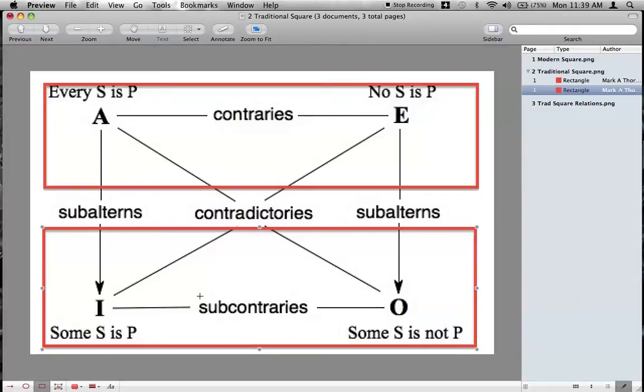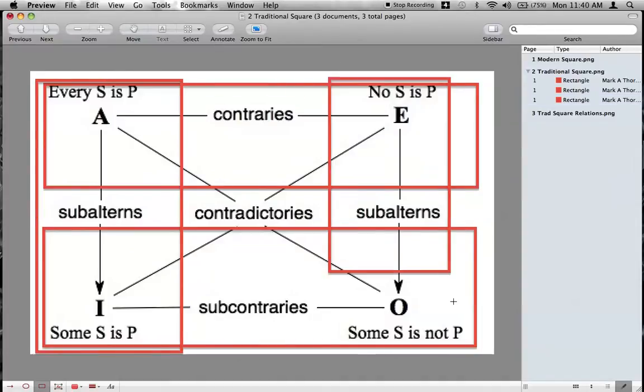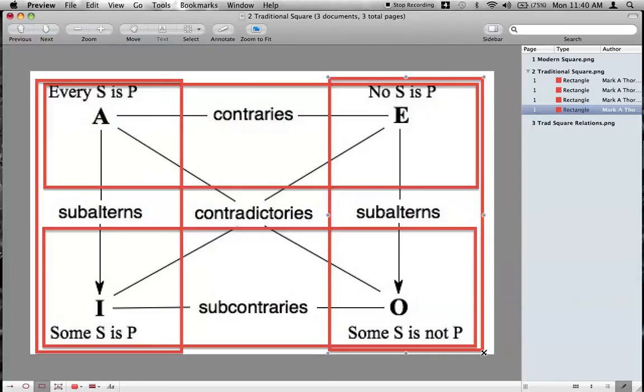So, these are the universals up here, and the particulars are down here. Now, by contrast, you can also see that this side of the proposition, over here, these are the affirmatives, and let me draw a little square here for you, that the A and the I, these are affirmatives, whereas the E and the O are negatives. So, you can see you can divide it both between the quality and the quantity, going back to those concepts.